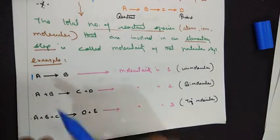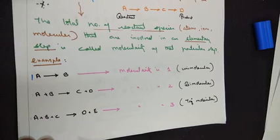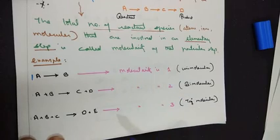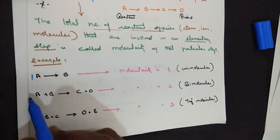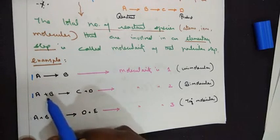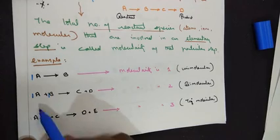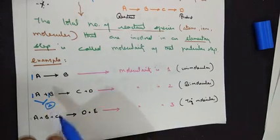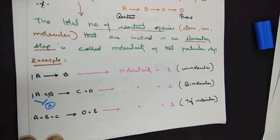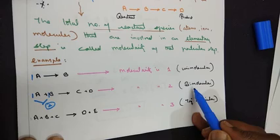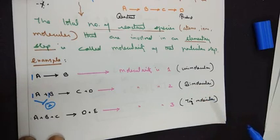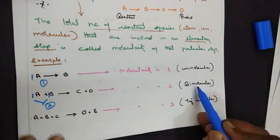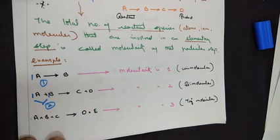A unimolecular reaction means the number of reactants is one. Moving to the second type: molecularity is 2. One mole of reactant A and one mole of reactant B — together the total number of reactant species is two. Since the number is 2, it's also called a bimolecular reaction. So unimolecular means reactant species is one; bimolecular means reactant species is two.